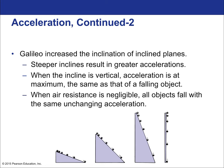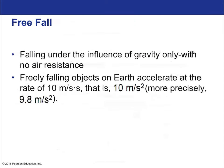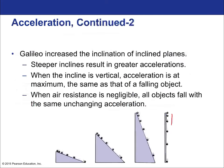Back to Galileo: he laid the framework for the modern understanding of acceleration by increasing the inclination of inclined planes. Steeper inclines resulted in greater acceleration. When the incline is vertical, acceleration is at a maximum on the surface of Earth — the same as a freely falling object. When air resistance is negligible, all objects fall with the same unchanging acceleration of gravity.